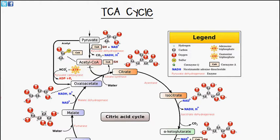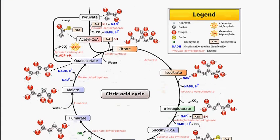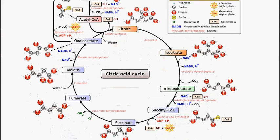Following on from this, citrate is then isomerized and converted into isocitrate via an enzyme known as aconitase. Its structure is basically reorganized and it forms isocitrate.